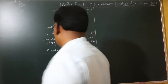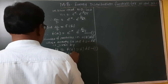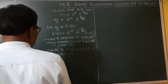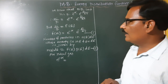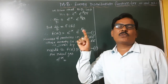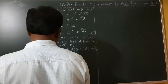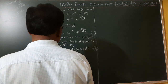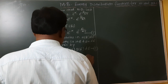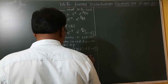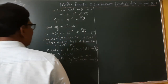For an ideal gas, the value of e^(-α) has already been derived in the last period. That is: e^(-α) = (N/V) · (h²/2πmkT)^(3/2). Equivalently, e^(α) = (N/V) · (h²/2πmkT)^(3/2). This is equation number 3. We now put this value into equation 1.